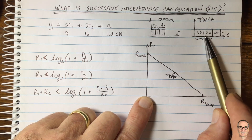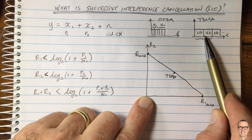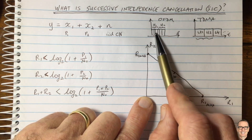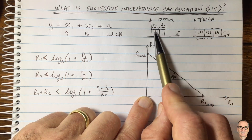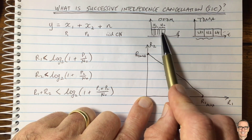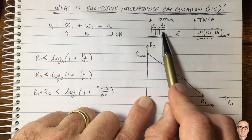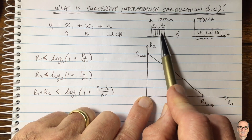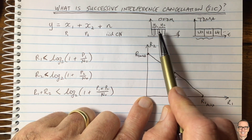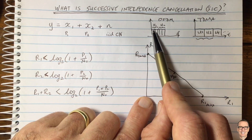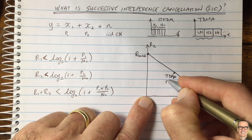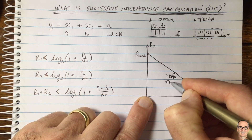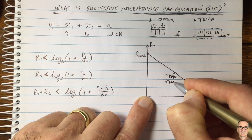Exactly the same thing holds with OFDM, where you can change the fraction of sub-channels allocated to each user. Under the assumption that the power per sub-channel is fixed, this also gives the FDMA curve — the same straight line in the rate region.